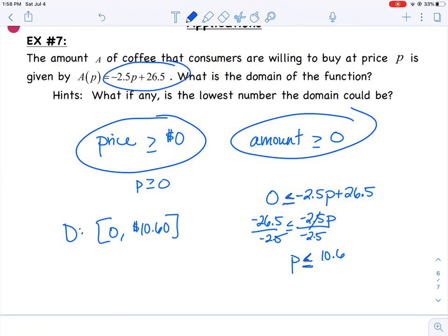So if our amount is negative 2.5P plus 26.5, and it has to be greater than or equal to zero, well, then I should be able to make an equation that looks like this. Negative 2.5P plus 26.5 has to be greater than or equal to zero. What that's going to allow me to do is solve for P and maybe get another restriction.